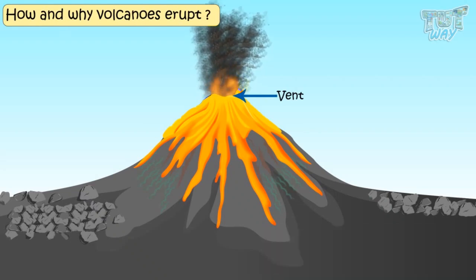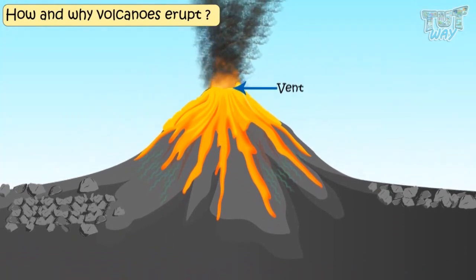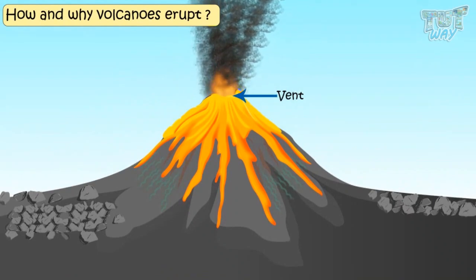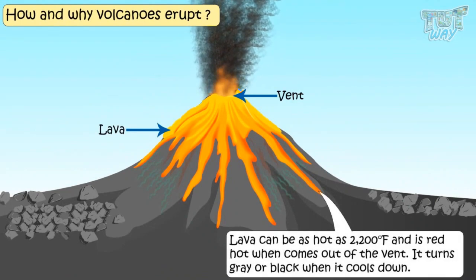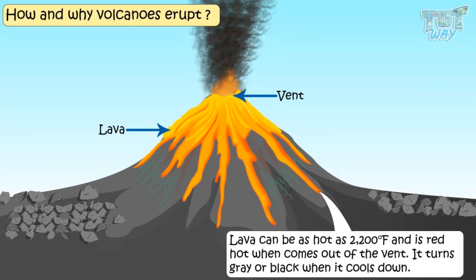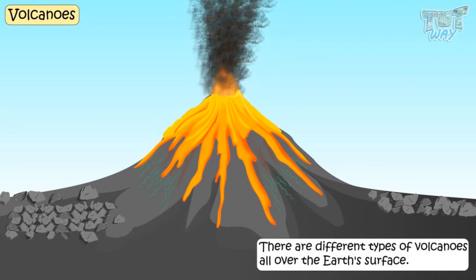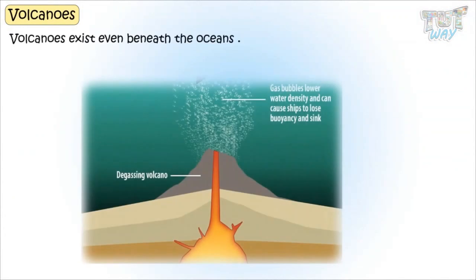When molten matter is still inside the earth, we call it magma, and when it comes out of the earth's surface, it is called lava. Lava can be as hot as 2,200 degrees Fahrenheit — it is red hot when it comes out of the vent, and turns gray or black when it cools down. Some volcanoes are very violent and some are not. There are different types of volcanoes all over the earth's surface, and volcanoes exist even beneath the ocean on the ocean beds.